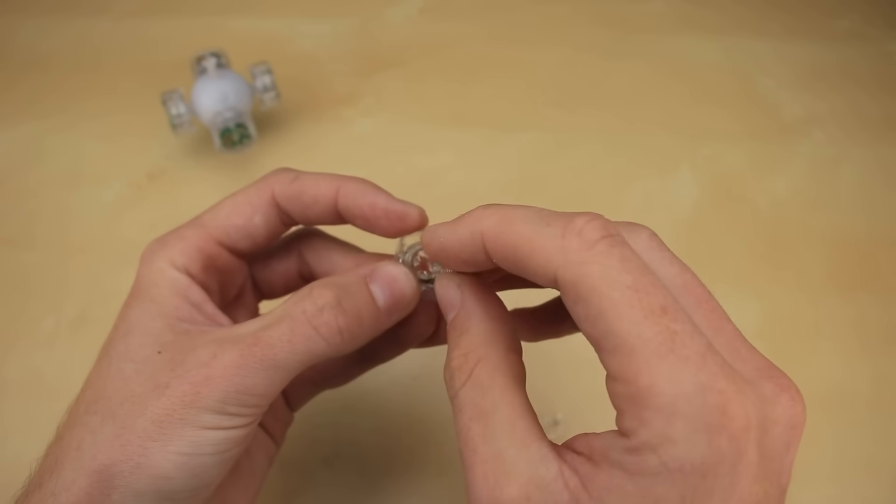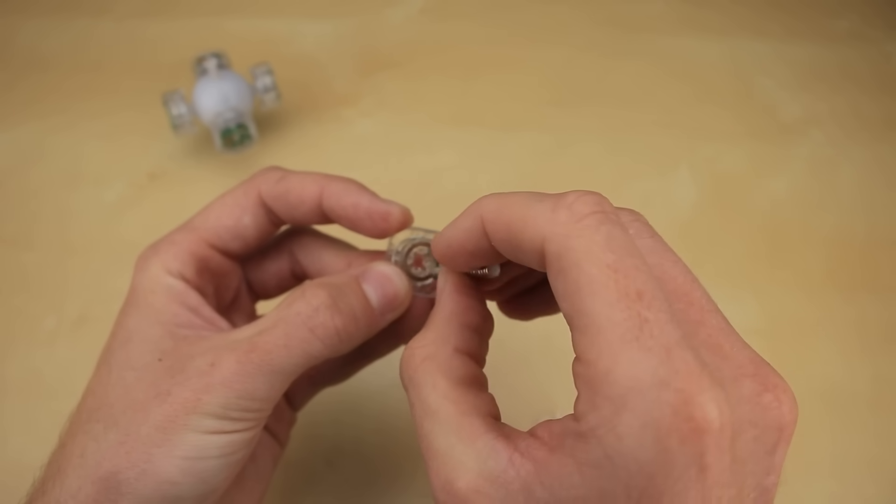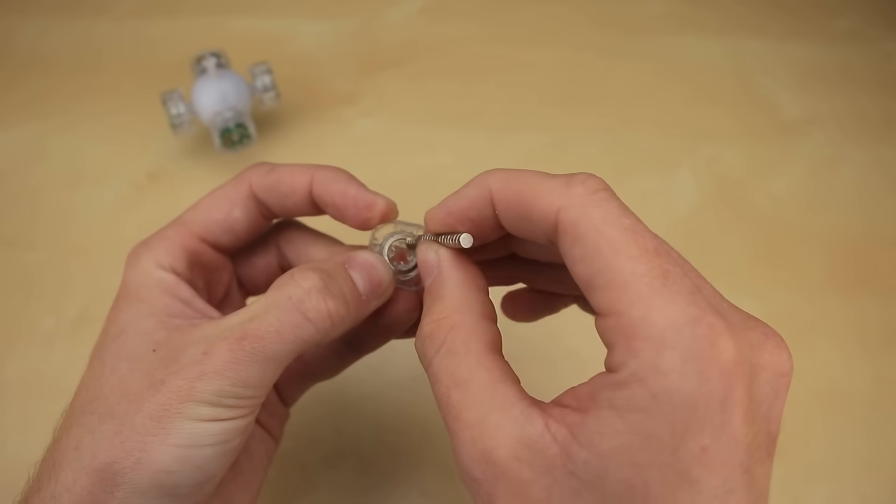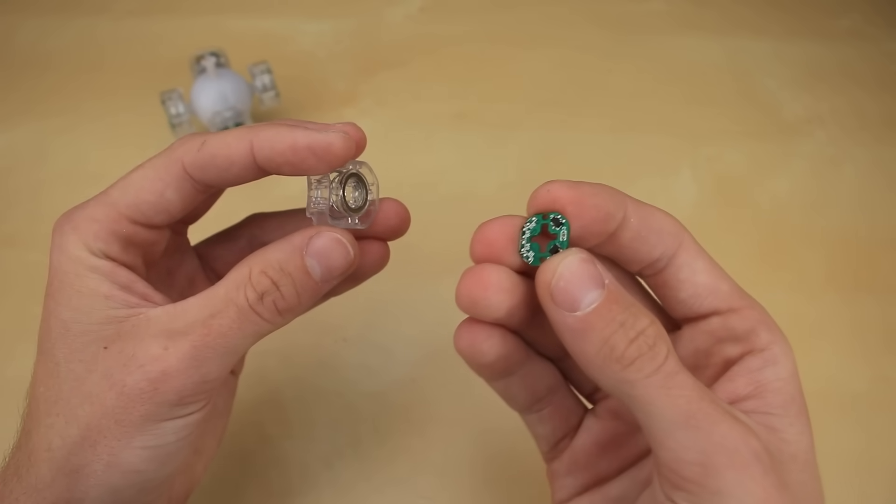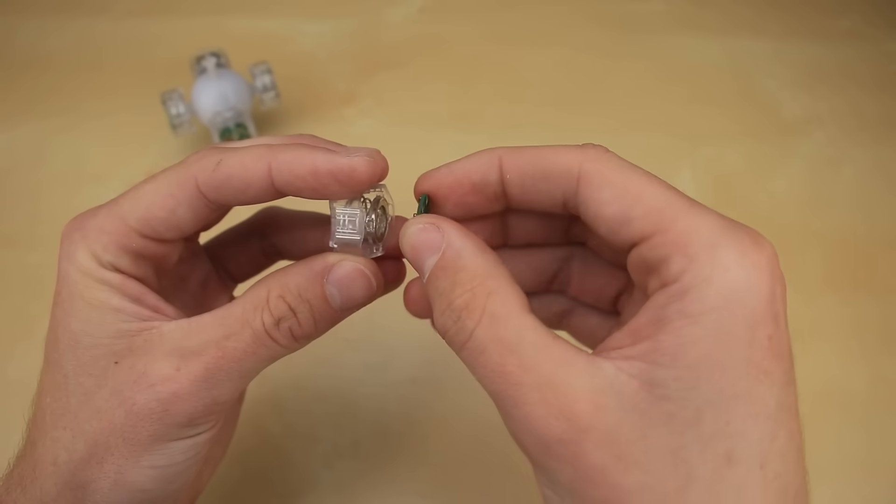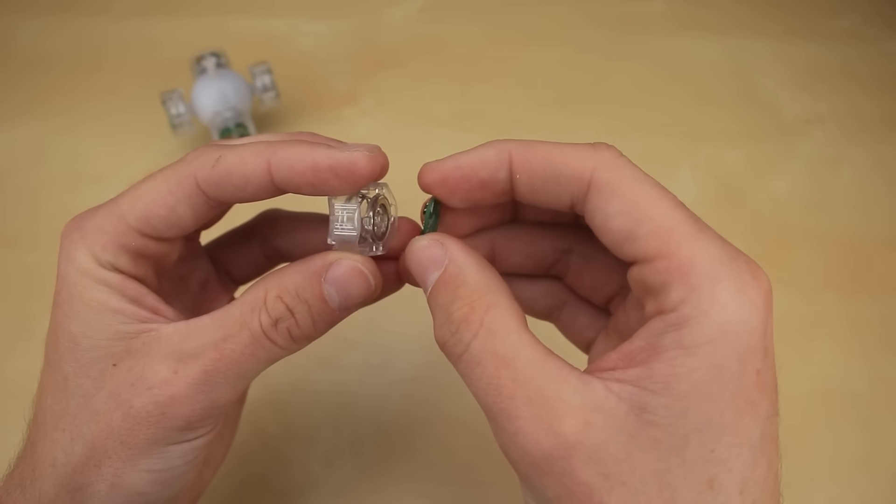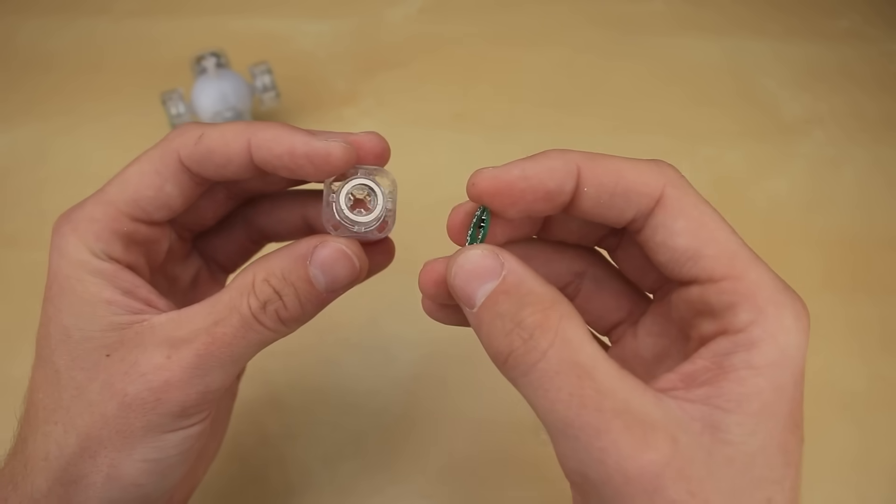Instead, we actually have north on one half of the ring, so this half right here, and then south on the other half of the ring, like that. And so, every time you turn the cube by 90 degrees, one of these two sensors will change either from south to north or from north to south, which the cube can use to figure out exactly how you turned it.